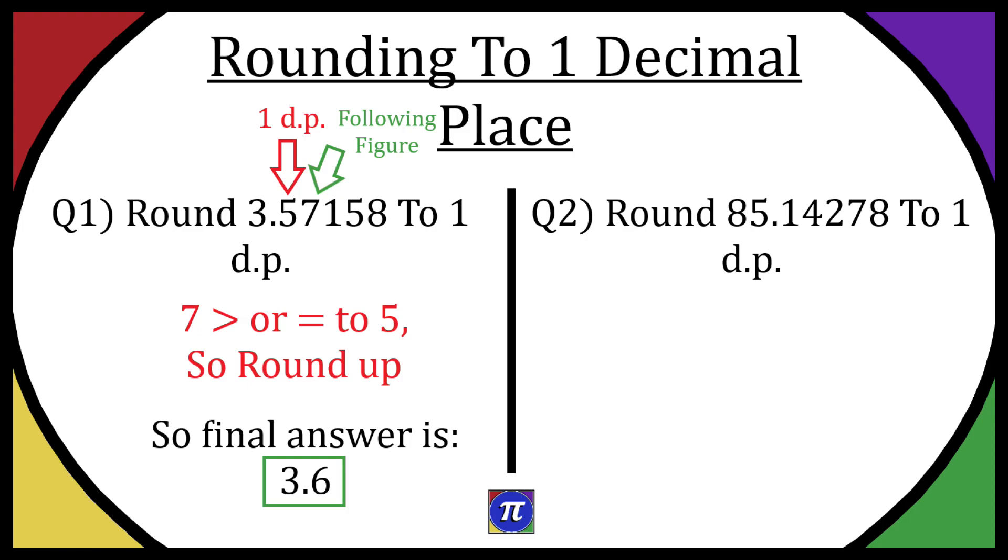Question number two: round 85.14278 to one decimal place. So again we identify the one decimal place number, in this case it's a one, and then the following figure is a four.